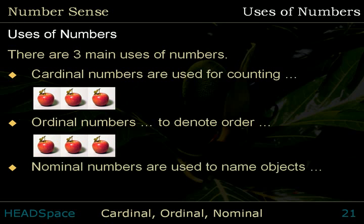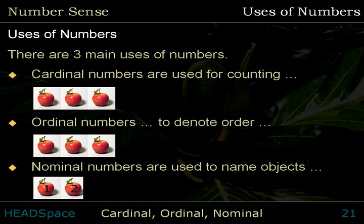Nominal numbers are used to name objects: Apple number 1, Apple number 2, Apple number 3. In everyday life, there are three main uses of numbers.